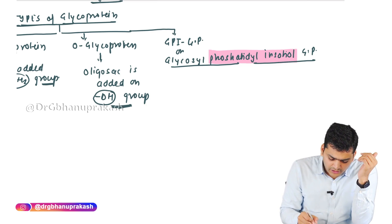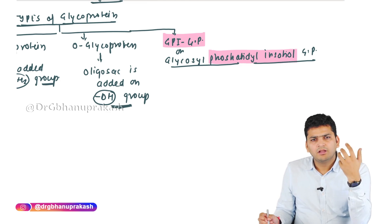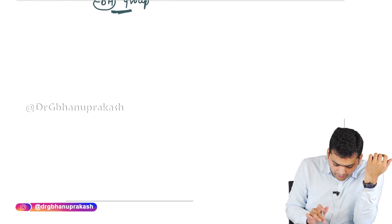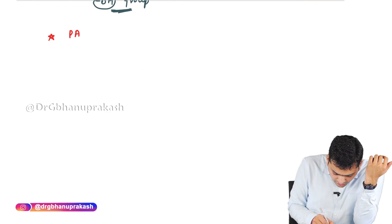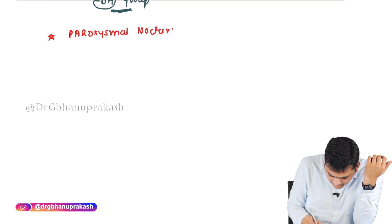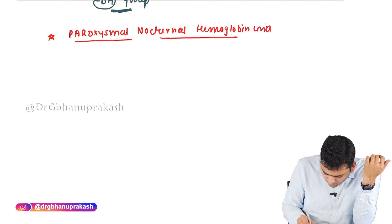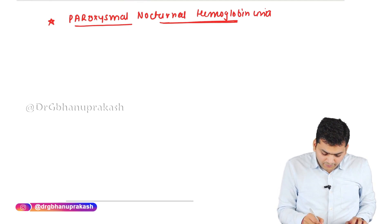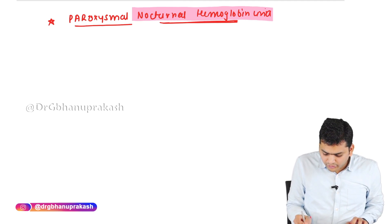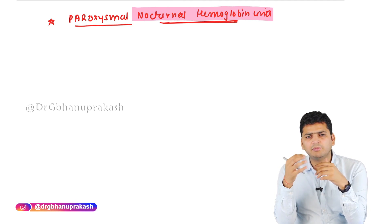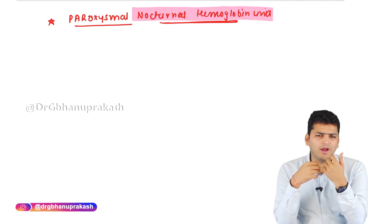The GPI-type of glycoprotein is very important to understand because there is a pathology based on it, and that is called Paroxysmal Nocturnal Hemoglobinuria. Nocturnal hemoglobinuria means there will be hemolysis or RBCs coming into the urine during the period of night.